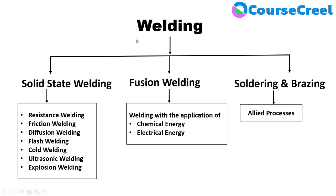The classification of welding is mainly divided into three parts: solid state welding, fusion welding, and soldering and brazing. Solid state welding is defined as a group of joining processes in which joining is achieved without melting — only by applying pressure, with or without application of heat. The temperature of the parent metal should not exceed the melting point.